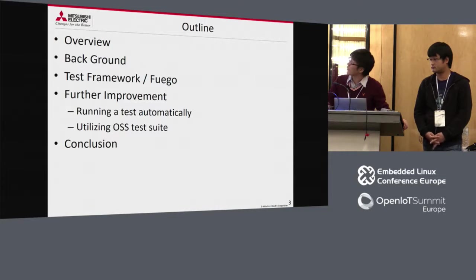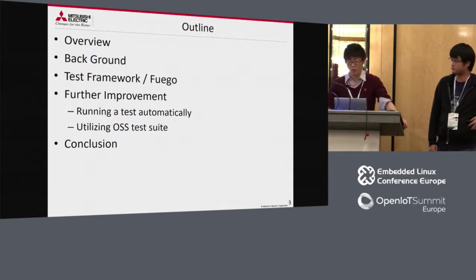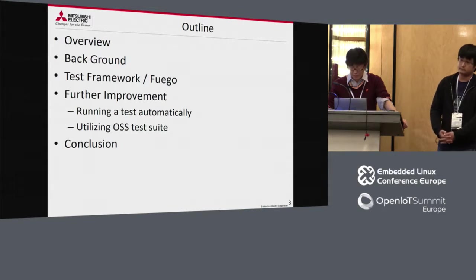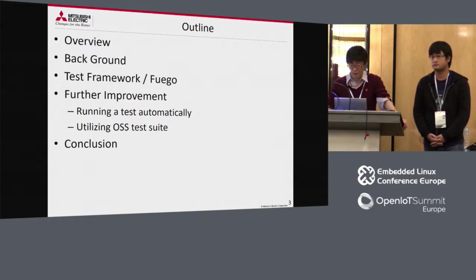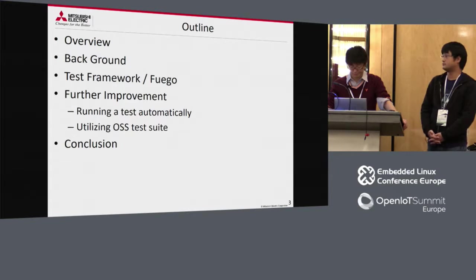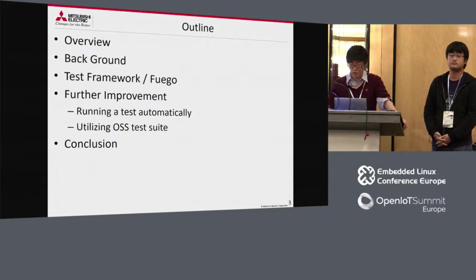This is an outline for this session. Firstly, I'll explain the overview and background. Then I'll explain why a test framework is needed. And I'll explain about Fuego, an OSS test framework, and improvements by customizing Fuego for more convenience based on our experience. This improvement is today's main topic.